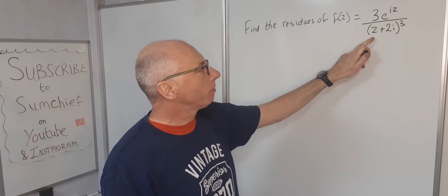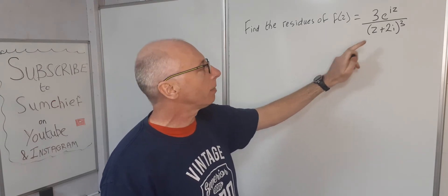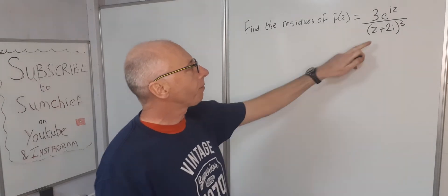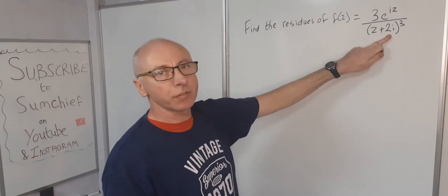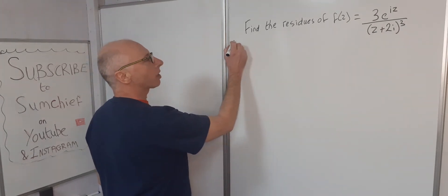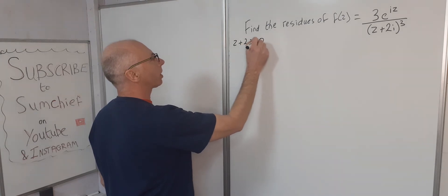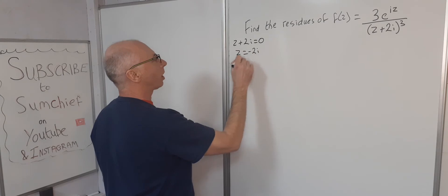There's a method we can use which involves differentiation and finding a limit. So first of all let's find the pole, see where the pole is at. So z + 2i, let's start with that. z + 2i equals 0, z equals -2i.